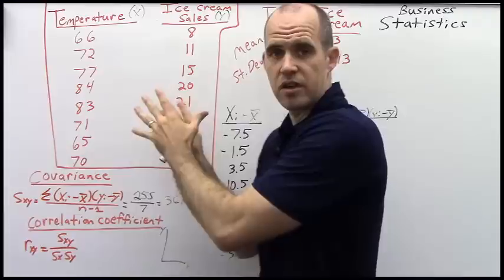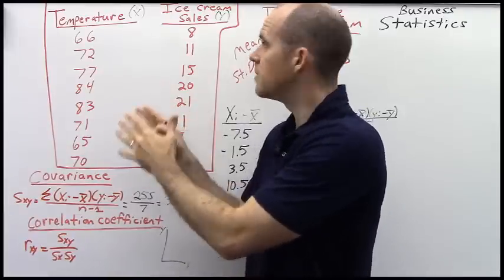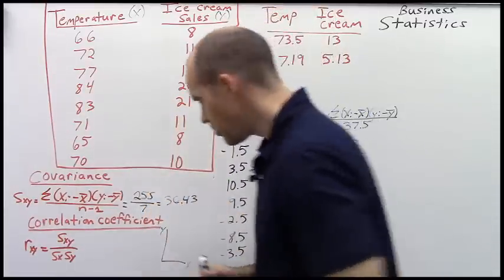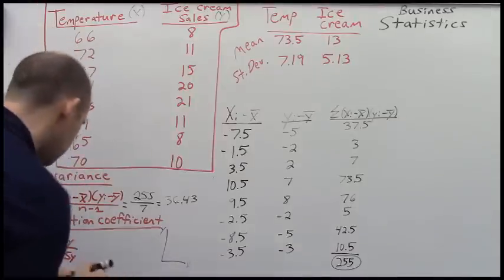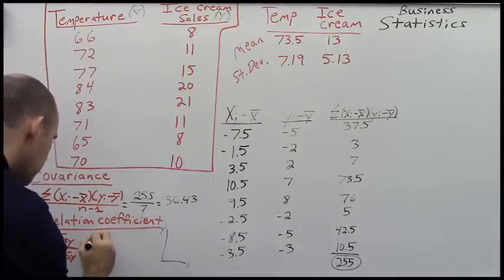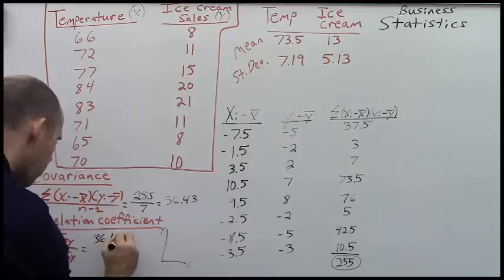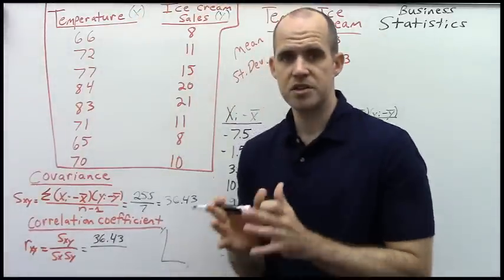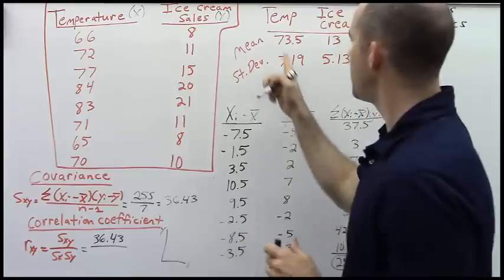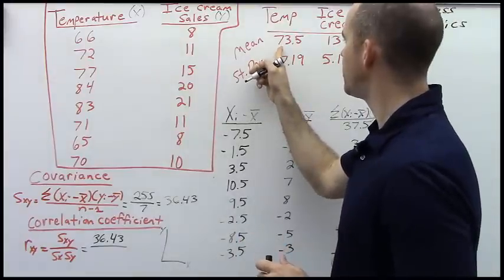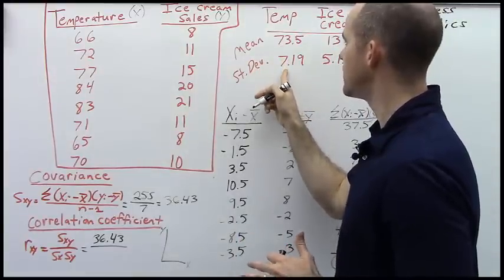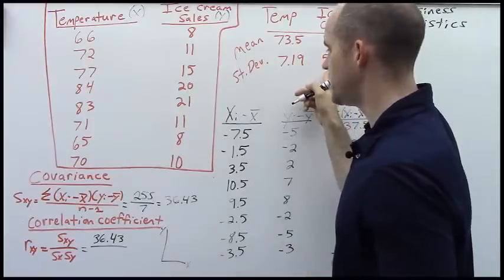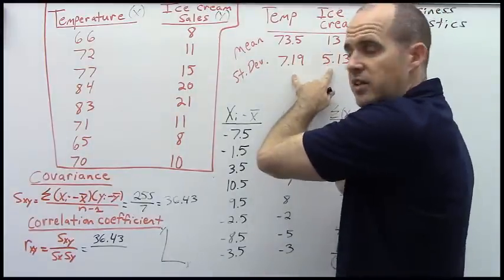So let's figure out the extent of the relationship between temperature and ice cream here in this small data set. We've already figured out that our covariance is 36.43. And in another video, I showed you how to do the mean and the standard deviation. We found that the mean is 73.5 and 7.19 standard deviation for temperature, 13 for ice cream, 5.13 standard deviation. So I'm going to take these standard deviations, the standard deviation for x, 7.19.